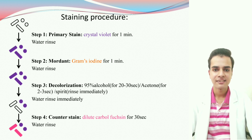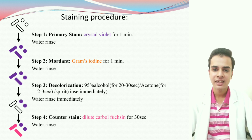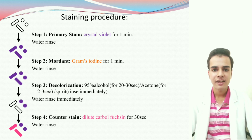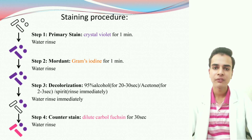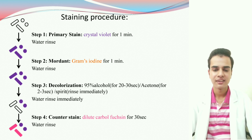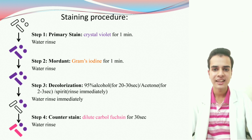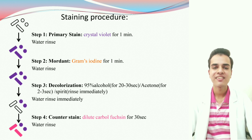In Step 3, we use the decolorizer. The time for which we allow the decolorizer to act depends on the decolorizer being used. If we are using 95% alcohol, we keep it for 20 to 30 seconds and then rinse immediately. If we are using acetone, we keep it for 2 to 3 seconds, then rinse immediately. In our laboratory, we use spirit, so after putting the decolorizer, we rinse it immediately. In Step 4, we put the counter-stain — dilute carbol fuchsin — pouring it over the slide covering the entire slide, keeping it for 30 seconds, and then rinsing with water. Let the smear air-dry and then it is ready for examination.